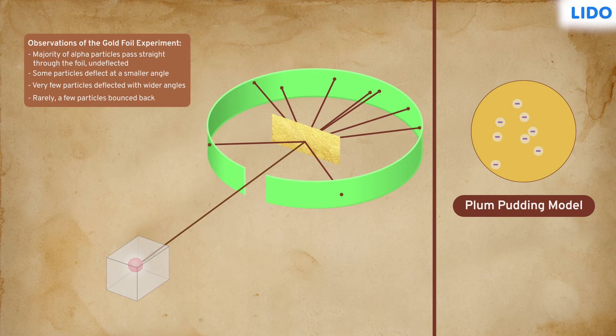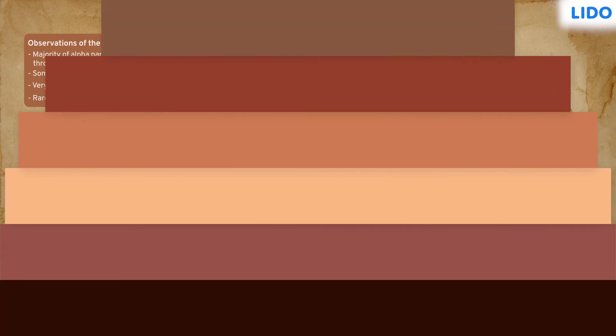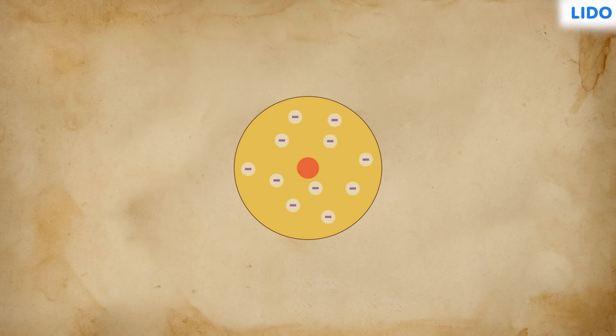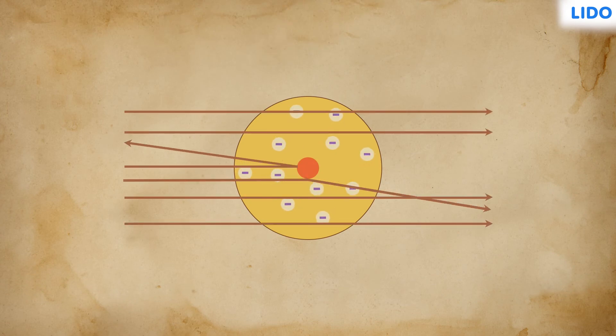On the basis of these observations, Rutherford concluded that the plum pudding model was not correct. There may be something at the centre of the atom with the same charge as alpha particles causing the particles to deviate from its path.